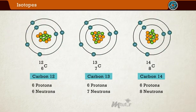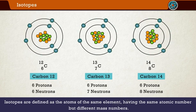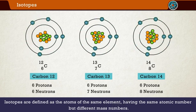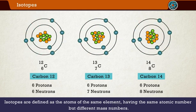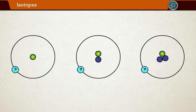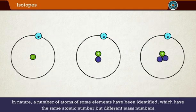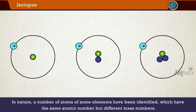Yes, in simple words, isotopes can be defined as the atoms of the same element having the same atomic number but different mass numbers. In nature, a number of atoms of some elements have been identified which have the same atomic number but different mass numbers. For example,